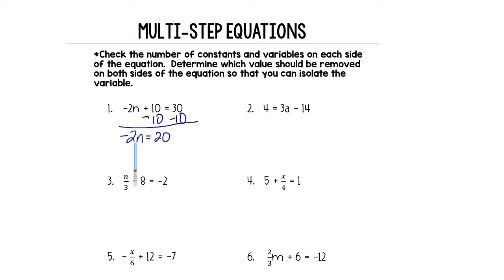It's multiplying. So instead of multiply, we're going to do the opposite, which is divide. So we're going to divide both sides by negative 2. Remember, whatever we do to one side of the equation, we have to do to the other side. Get rid of those negative 2s. We're left with n equals 20 divided by negative 2, which is negative 10. And that's our answer.